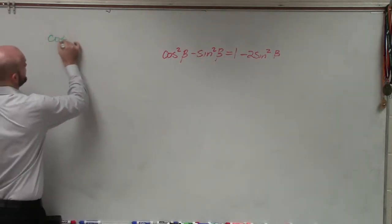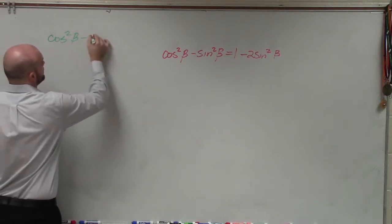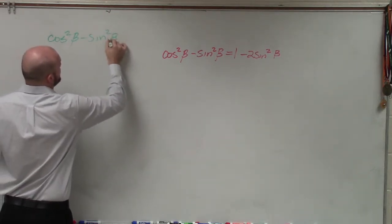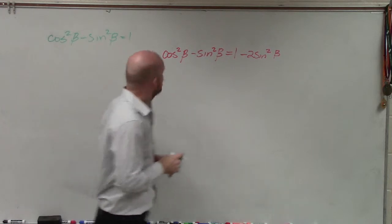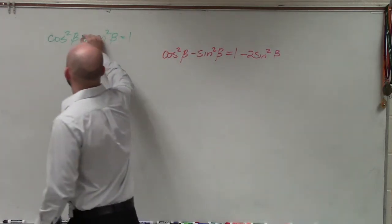Remember, the Pythagorean identity says cosine squared of beta plus sine squared of beta equals 1.